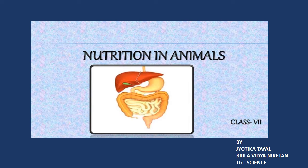The alimentary canal has different parts modified for specialized functions like ingestion, digestion, absorption, and ejection. There are three main associated digestive glands which pour their secretions into the alimentary canal: these are the salivary glands, liver, and pancreas. The digestive tract starts from the mouth and ends at the anus.